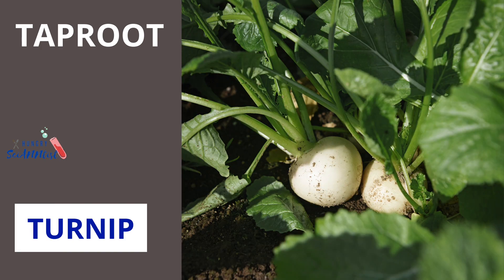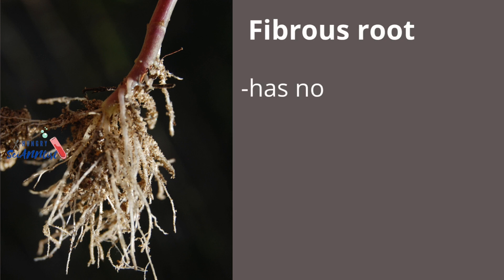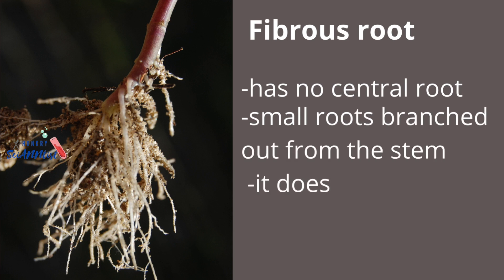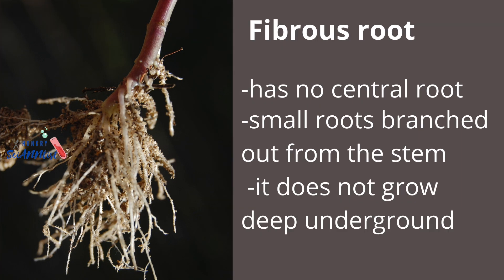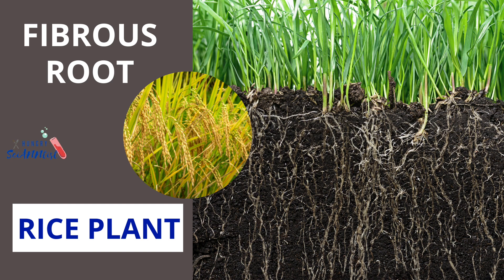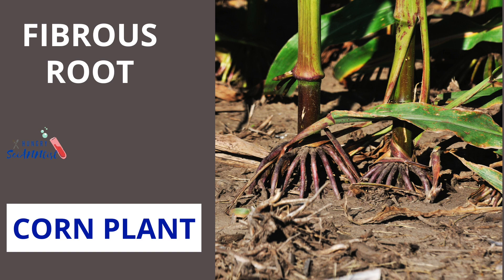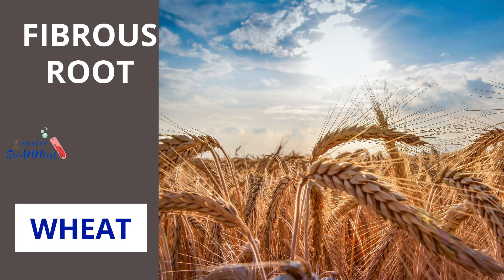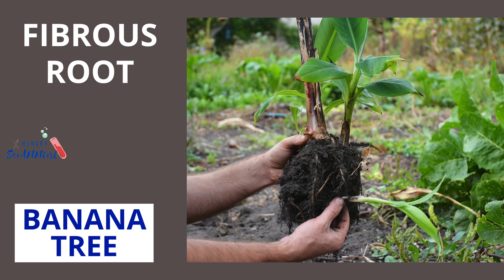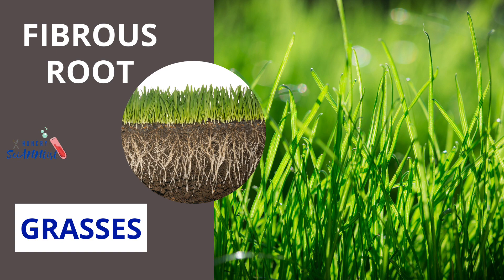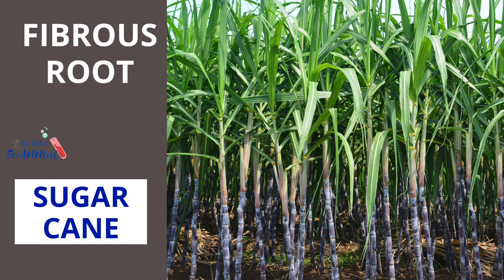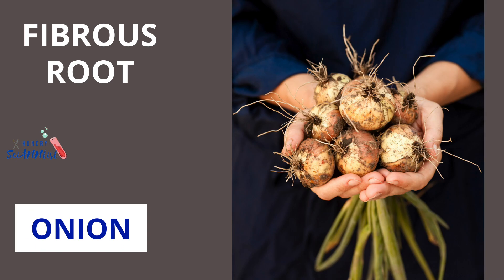Fibrous roots have no central root; small roots branch out from the stem and do not grow deep underground. Examples of plants with fibrous roots are: rice plant, corn plant, wheat, coconut tree, banana tree, grasses, bamboo, sugarcane, onion, and spring onion.